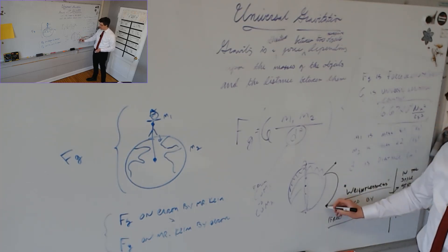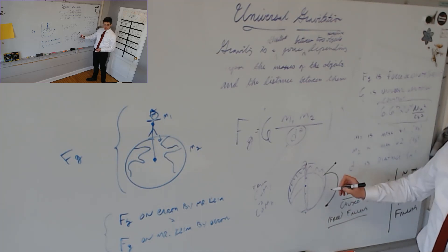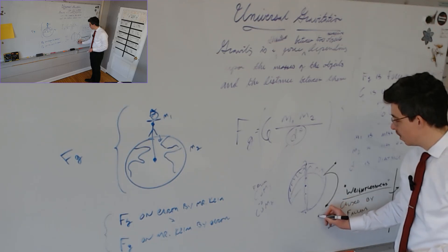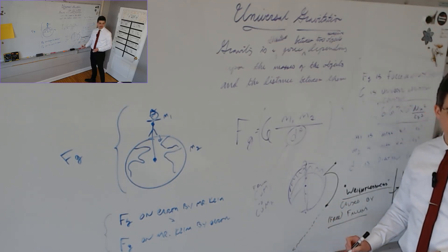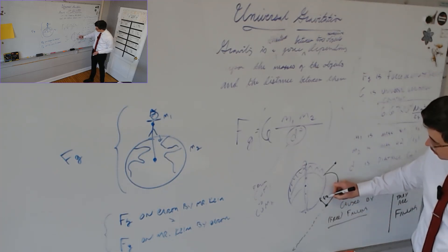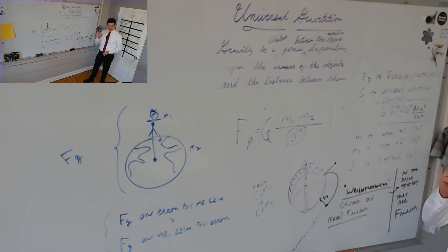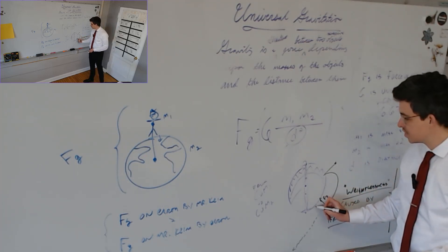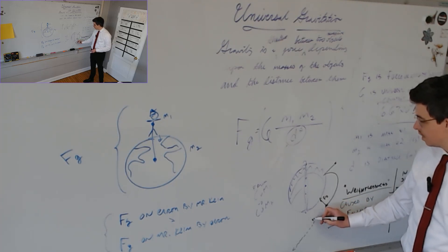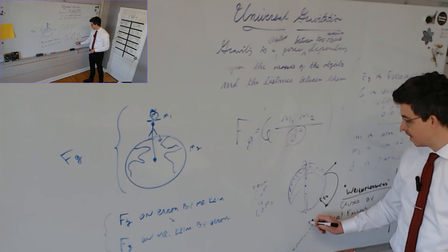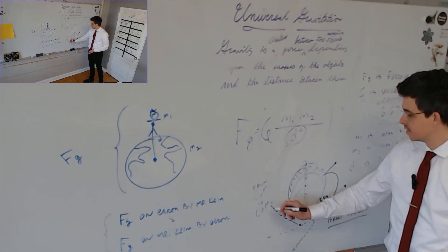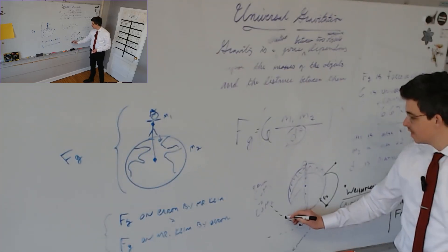Every second that passes, it is being pulled in by Earth — just like our circular motion unit. Inertia or its velocity would have it go in a straight line forever, but the force of gravity keeps it turning. And so every second it falls, the Earth's surface curves away from it. By the time it has fallen that much, it is now here and the Earth has curved away, et cetera. Just like our circular motion unit — it's actually falling.